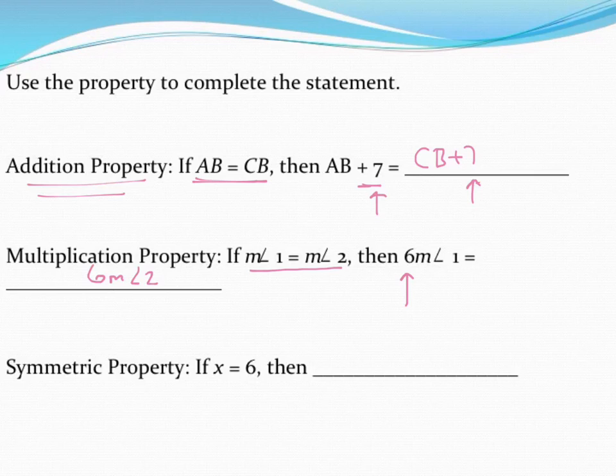And last up we have the symmetric property. Remember that sort of took something and folded it back over on itself. So they give you the statement x equals 6. So using the symmetric property we can also say that 6 equals x if I flip it around.